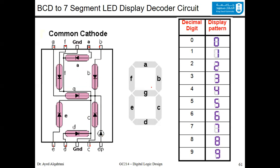The job of the BCD to seven-segment LED display decoder is, for example, if you have the decimal digit zero, you should light up those six segments corresponding to A, B, C, D, E, and F. For digit seven, you should light up A, B, and C.